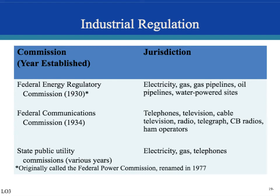The Federal Energy Regulatory Commission was established in 1930 and regulates electricity, gas, gas pipelines, oil pipelines, and water-powered sites. The Federal Communications Commission was established in 1934 and regulates telephones, television, cable television, radio, telegraphs, CB radios, and ham operators. State public utility commissions also regulate electricity, gas, and telephones.